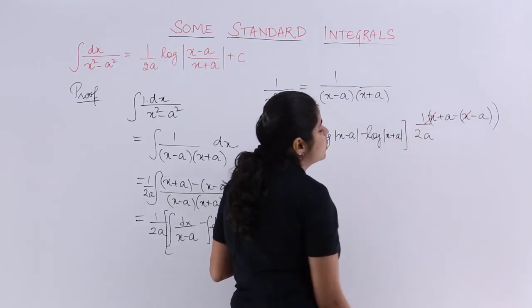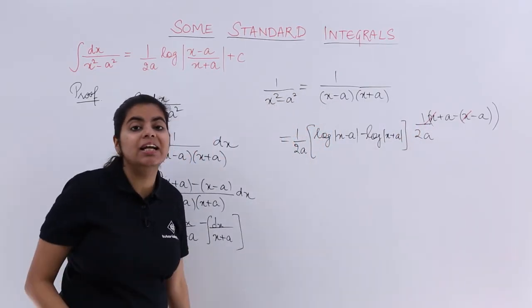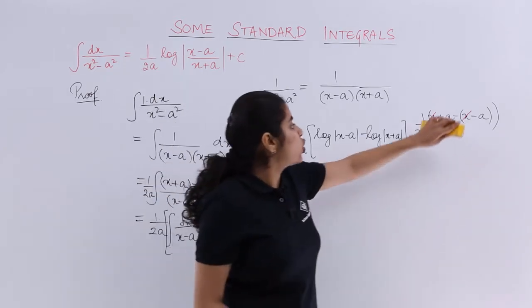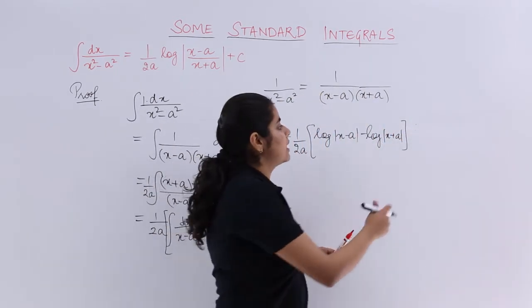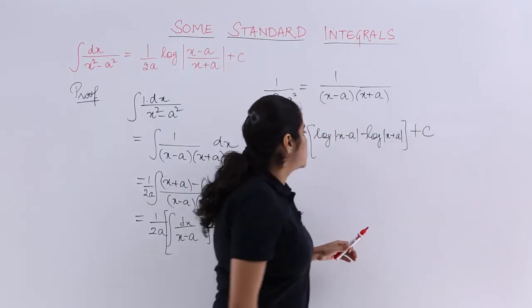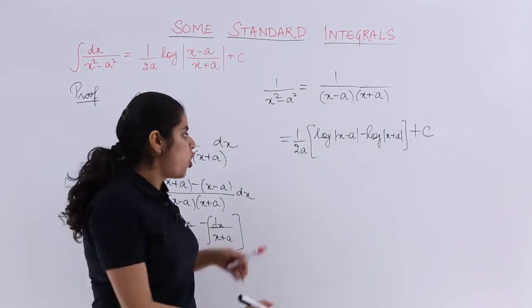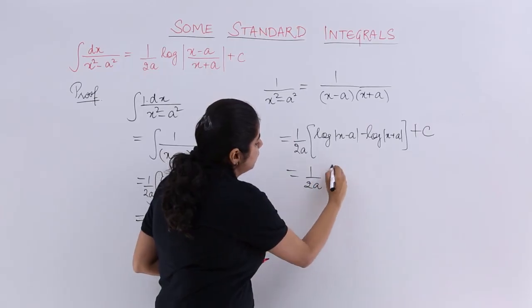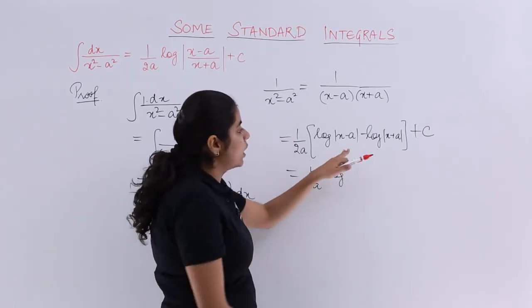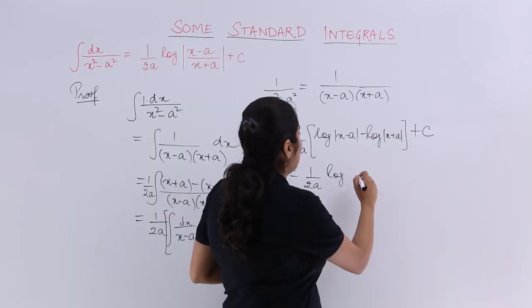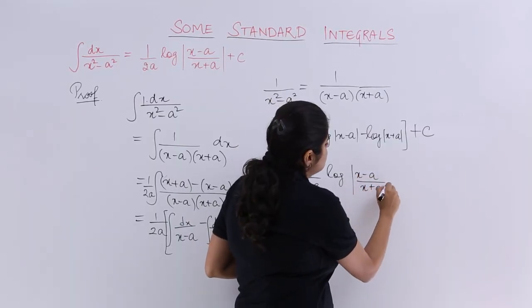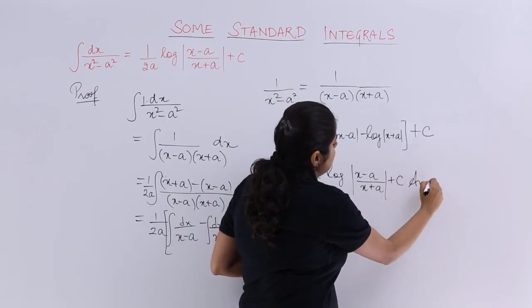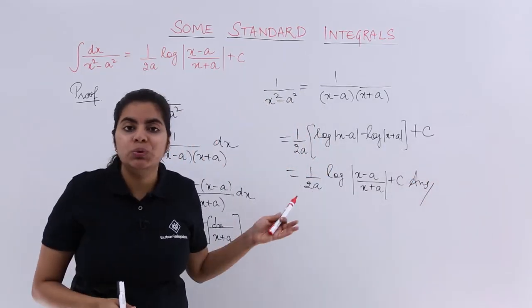And since you have done the integration, I always need a constant of integration too. So constant of integration has to be added and it becomes nothing but plus c. So either you leave the answer as it is or you simply write 1 upon 2a log, log m minus log n is what? Log m by n. So it is x minus a upon x plus a plus c and that is the answer to this integral.